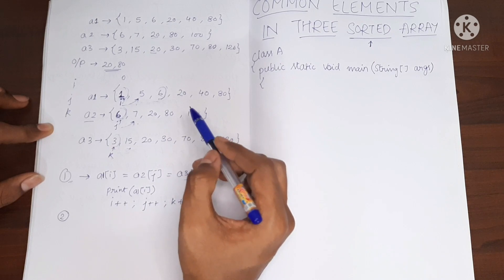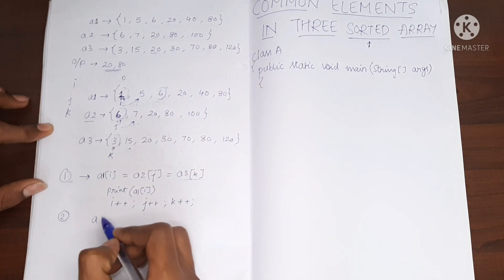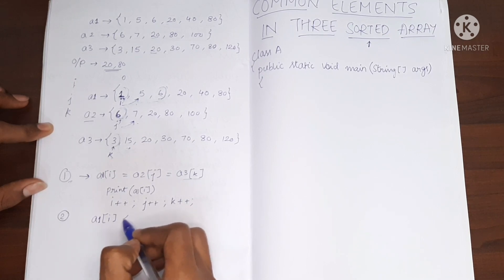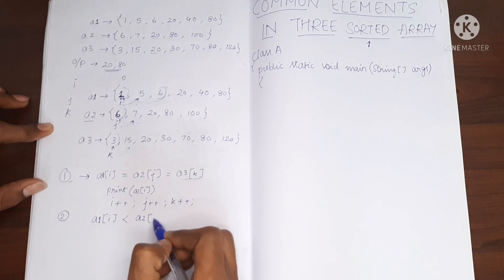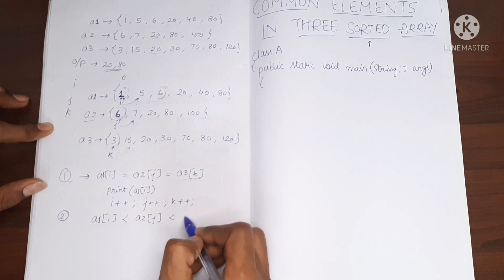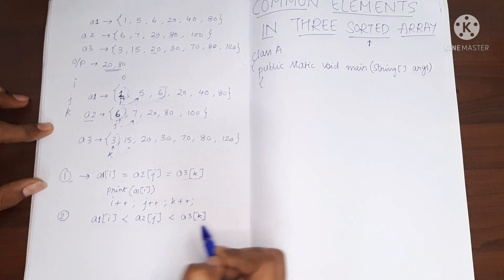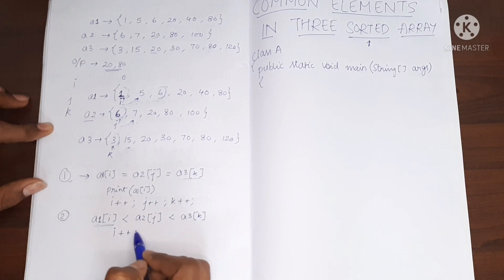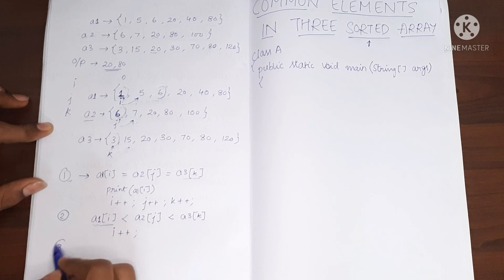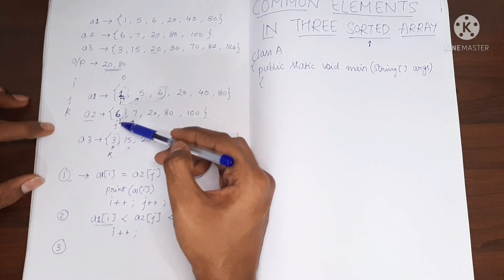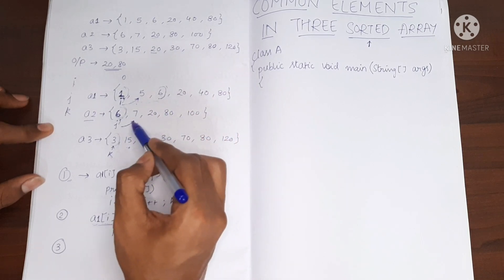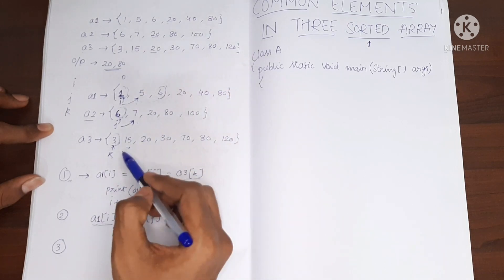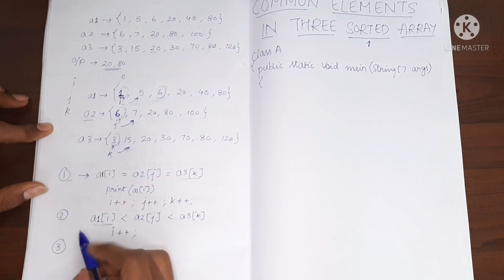Since the arrays are sorted in ascending order, what I am going to do is: if a1[i] is smaller than a2[j] and also smaller than a3[k], meaning this value is the smallest, I am going to do i++. Similarly, if the value at j is the smallest among the three, I'll increment j. If the value at k is the smallest, I'll increment k.